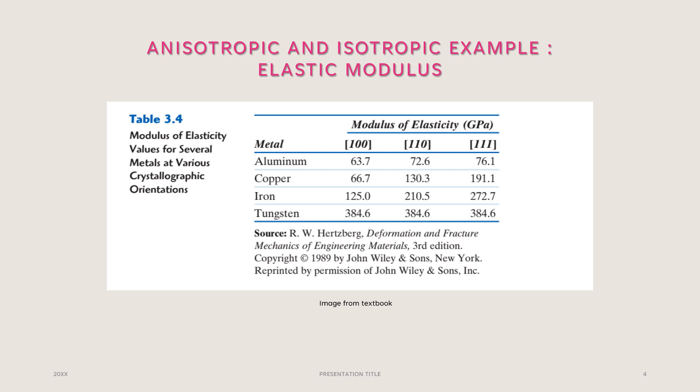As you can see, aluminum, copper, and iron are all anisotropic because their modulus of elasticity varies based on the direction of measurement. Tungsten, however, has the exact same modulus of elasticity regardless of the crystallographic orientation of measurement, which shows that tungsten is isotropic.